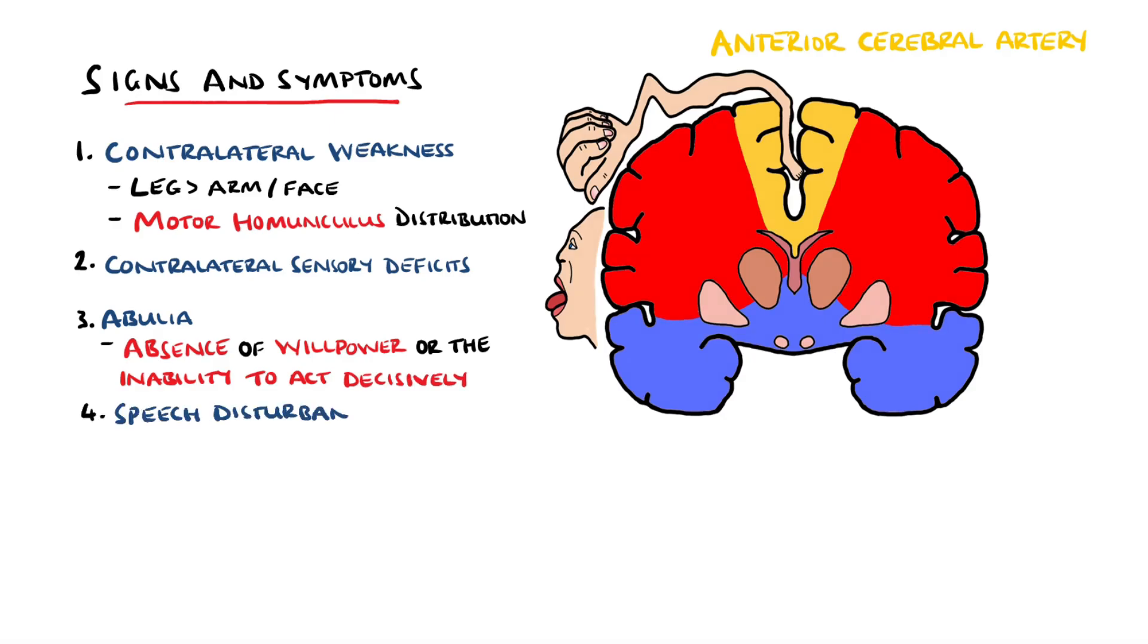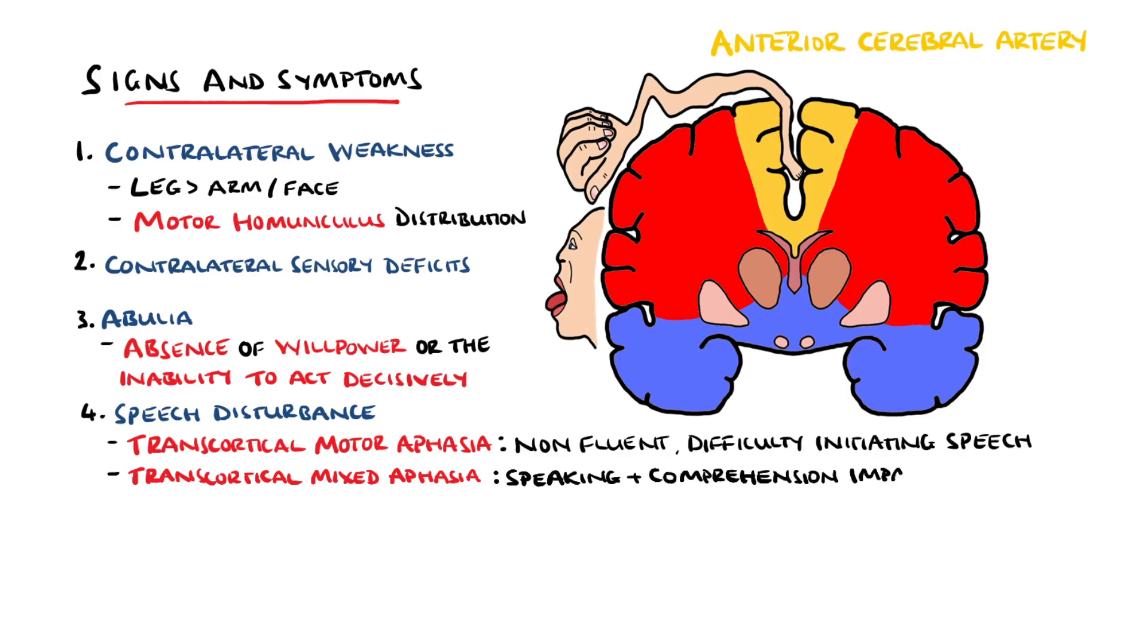Speech disturbances may also be present, specifically transcortical motor aphasia which is a non-fluent form of aphasia where the individual has difficulty in initiating sentences but may have good repetition skills. Another type is transcortical mixed aphasia meaning there are severe deficits in speaking and comprehension but repetition is preserved.